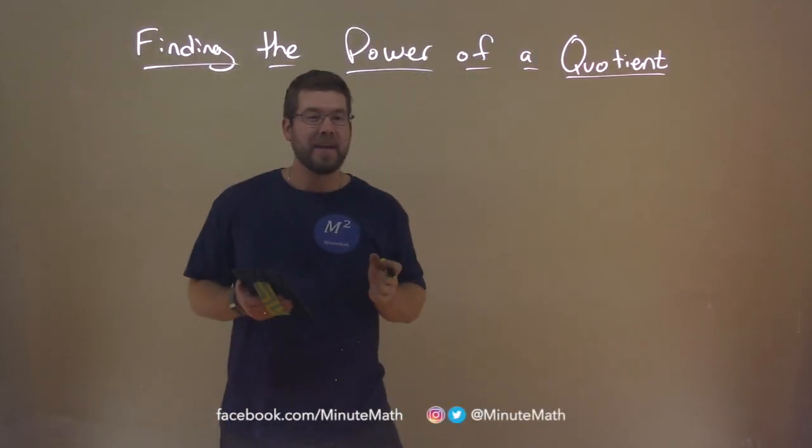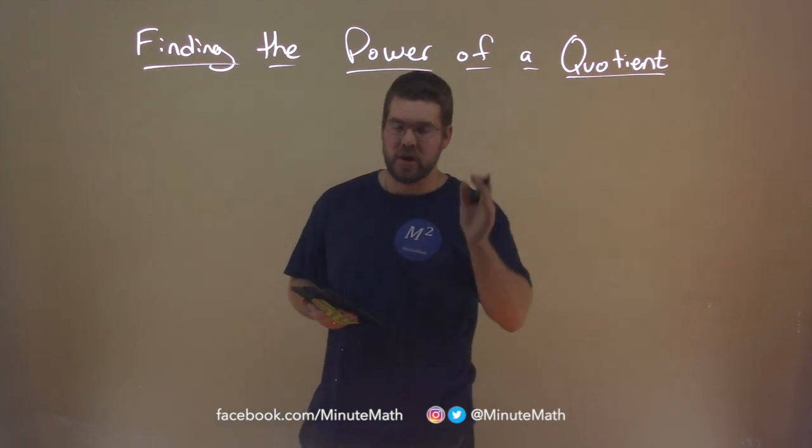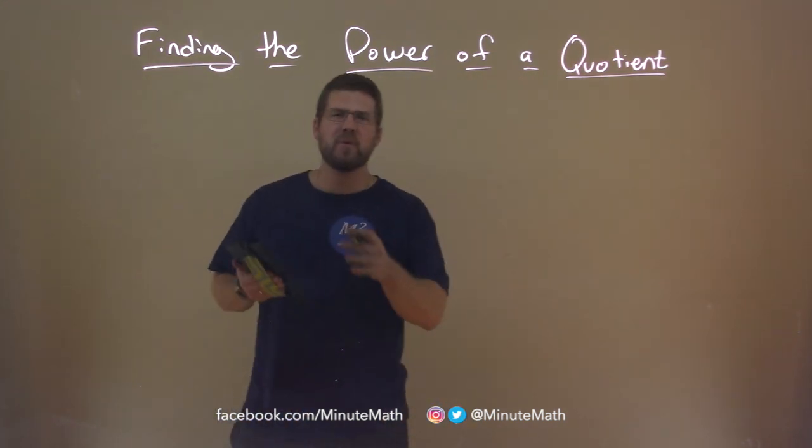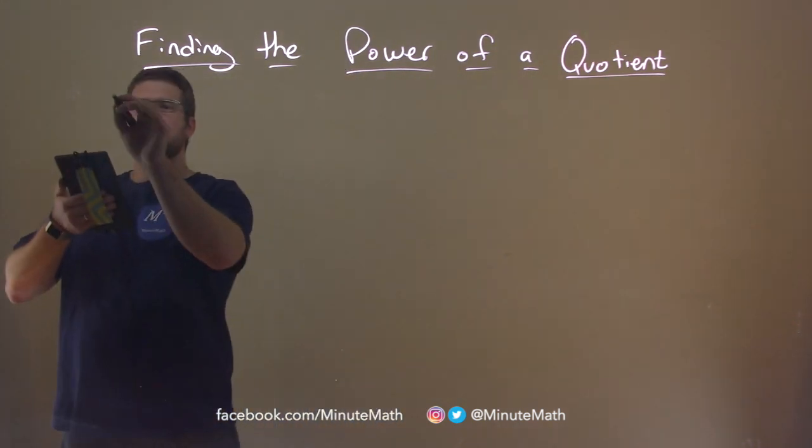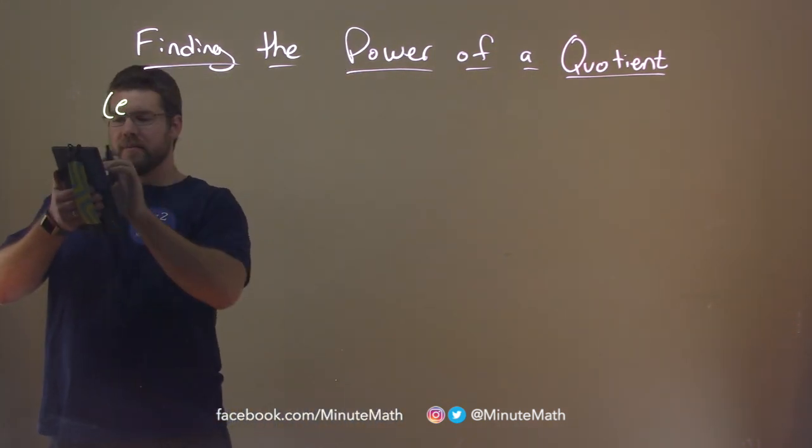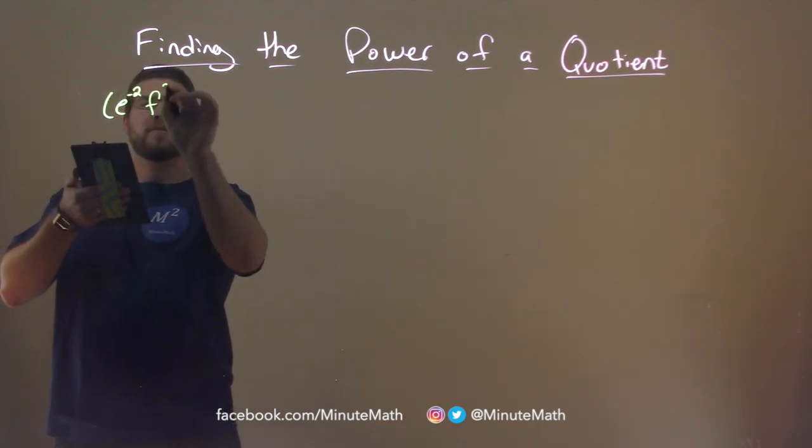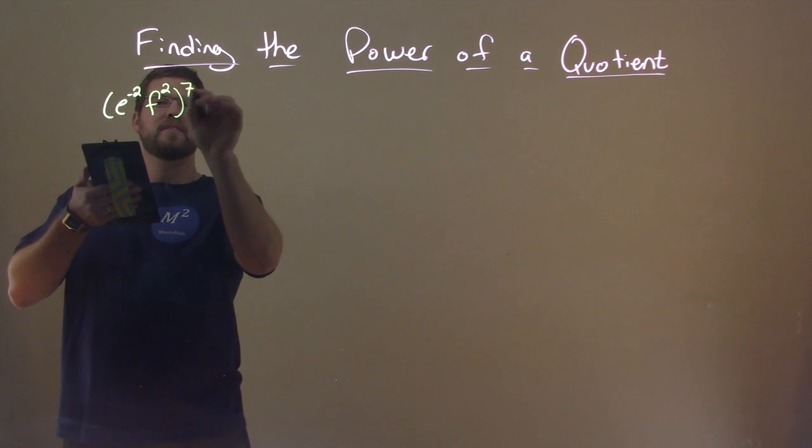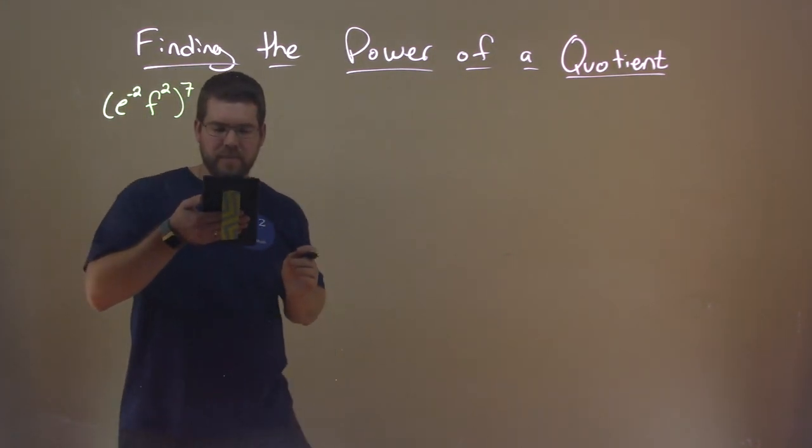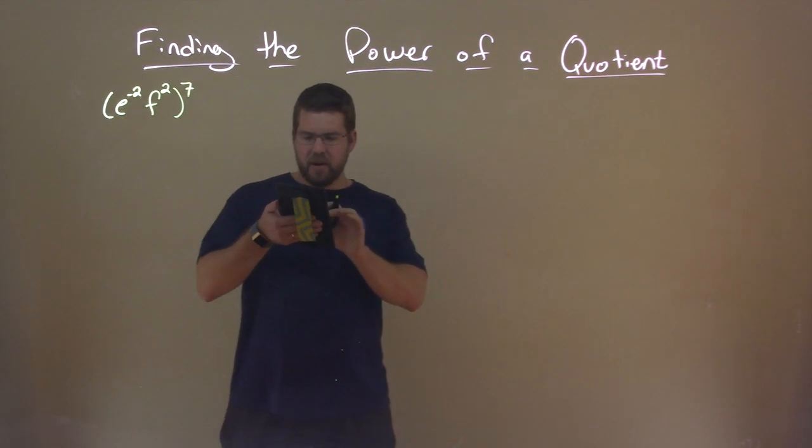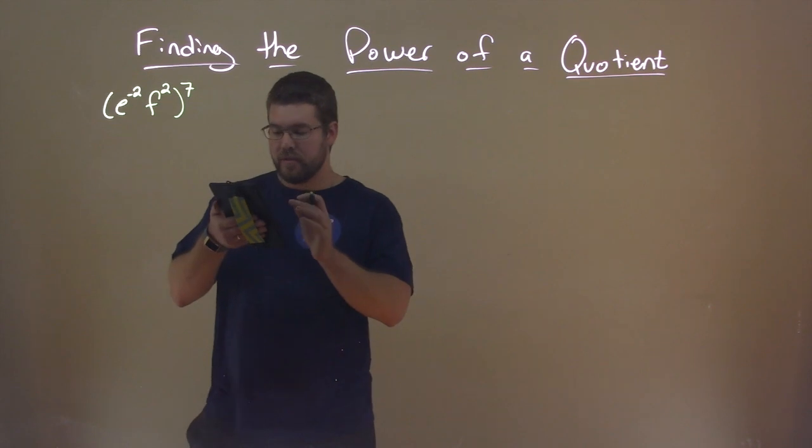So again, if we're thinking power, we're thinking exponents and quotient, and we've got some division going on here. So let's go through a quick example to get some groundwork. If we have e to the negative 2 power f squared all to the 7th power. So if we look from our previous example, we know that this result really comes down to...